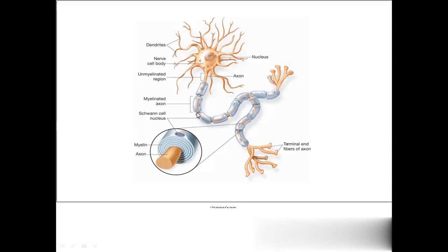The gaps along the axon are called nodes of Ranvier, and the space between node to node is called the internode. The dendrites look like tree branches, which is why they are named dendrites. The nerve terminal forms connections with the dendrites of other neurons. Inside the cell body, we have the nucleus. The myelin sheath is formed by Schwann cells — for every myelin sheath, we have one Schwann cell. These are the main parts of the neuron.